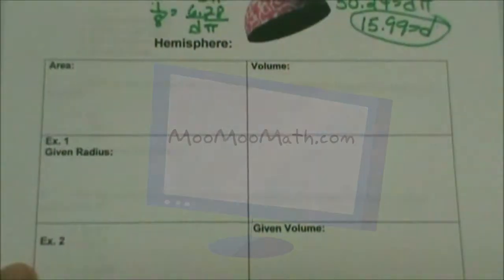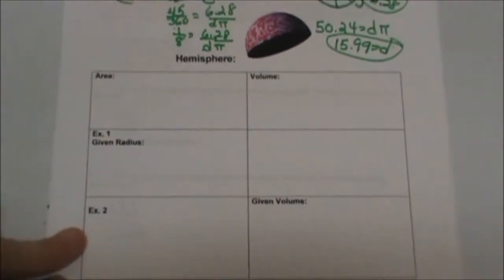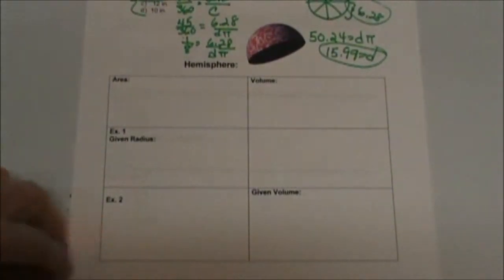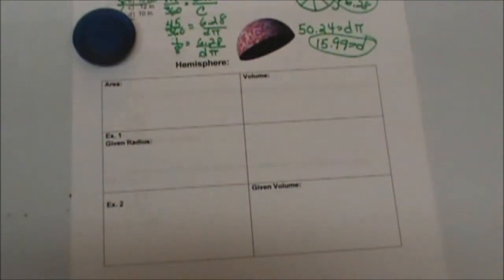This is the last concept in this unit. Hemispheres are really building off of spheres, so if you understand spheres, hemispheres are really easy.